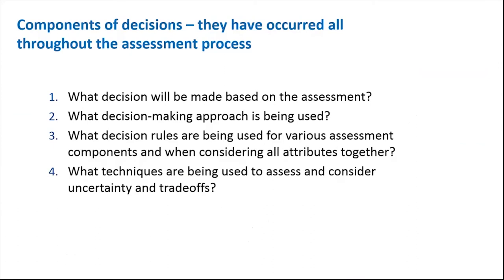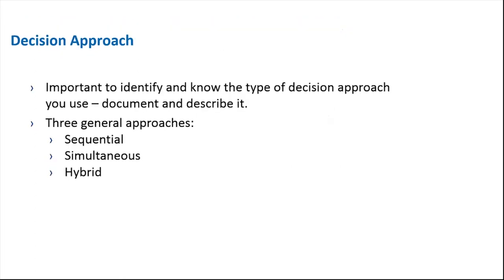There are several components to the decision-making process in an alternatives assessment, and they began in session one during the scoping phase. What decision will be made based on the assessment? This should have been addressed in the scoping phase when goals are defined. What decision-making approach is being used? What decision rules are being used for various assessment components and when considering all attributes together? What techniques are being used to assess uncertainty and tradeoffs? We went into detail about number one in the scoping phase and will address numbers two through four here.